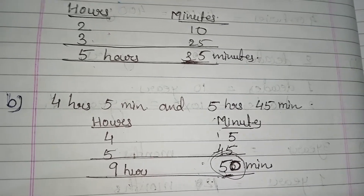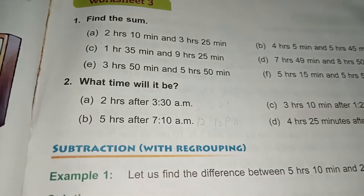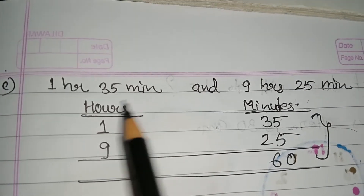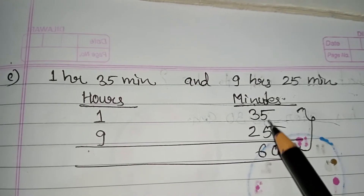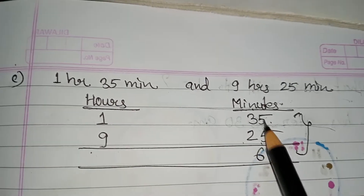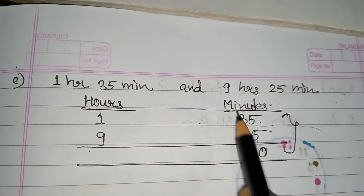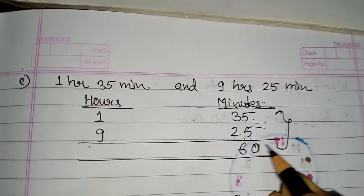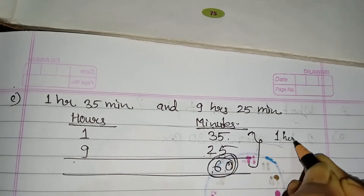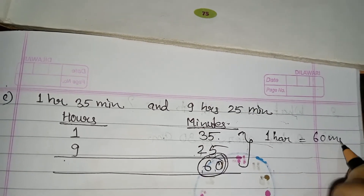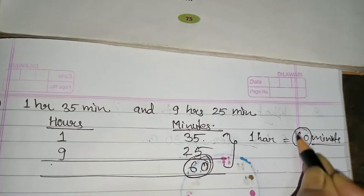Next question, number C: 1 hour 35 minutes and 9 hours 25 minutes. You will add hours below hours, minutes below minutes. Here is 35 minutes and here is 25 minutes. When you add 5 plus 5, that's 10 — write 0 and carry 1. Then 3 plus 2 is 5, plus 1 carry is 6. So here you have 60 minutes.